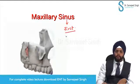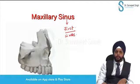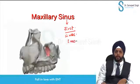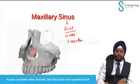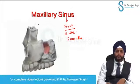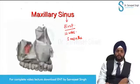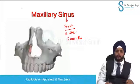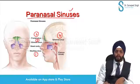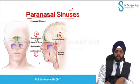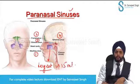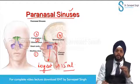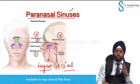The maxillary sinus starts developing at twelve weeks — three months of intrauterine life. This maxillary sinus is the largest paranasal sinus. Adult volume is fifteen ml. Because it is a very big cavity, we also call it the maxillary antrum.